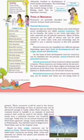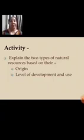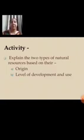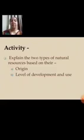Abiotic resources are non-living — all non-living things are included in that — whereas biotic resources are living things. Whatever we have learned in this chapter so far, I feel you have understood it very well. Now here I have given you an activity. I hope you have already done the previous activity; if not, do it immediately. Go through today's activity: write the two types of natural resources based on their origin as well as based on their level of development and use. See you in the next session with further classification of natural resources on the basis of stock and distribution. Till then, take care.